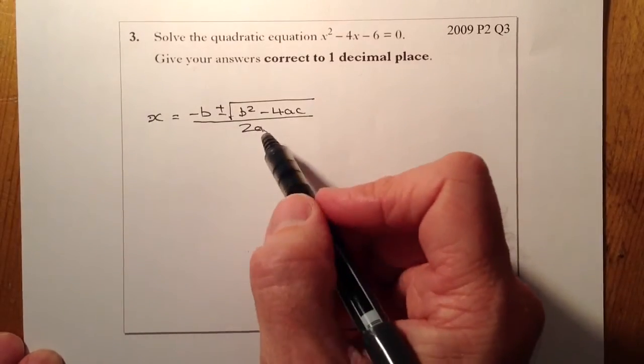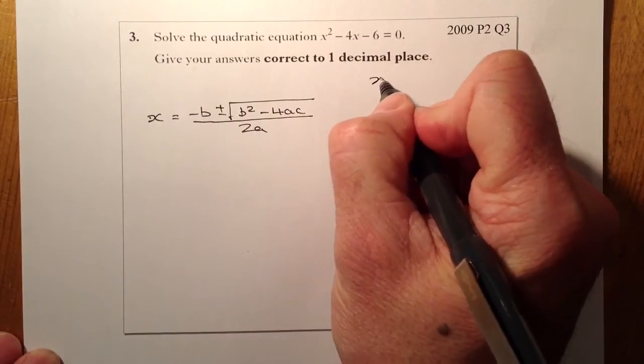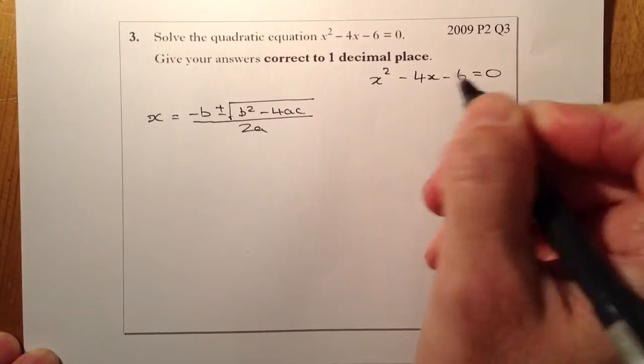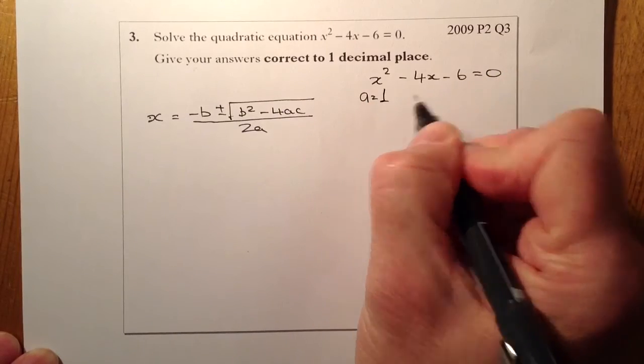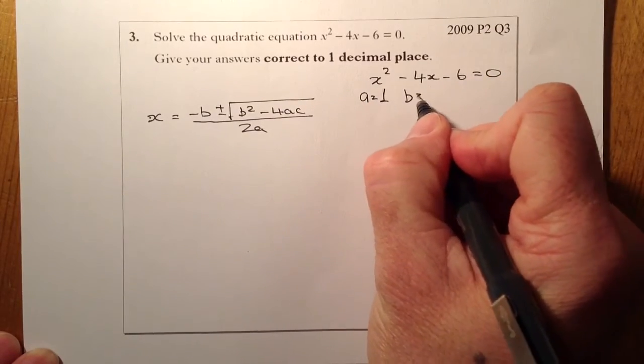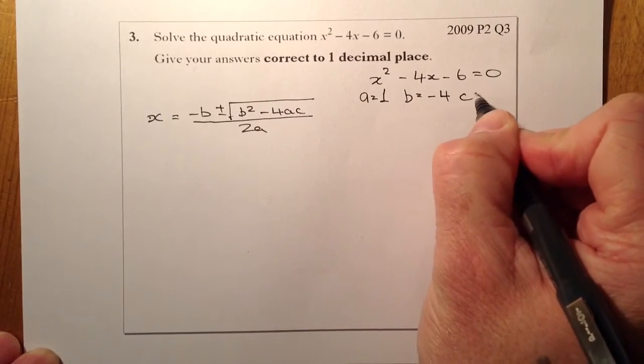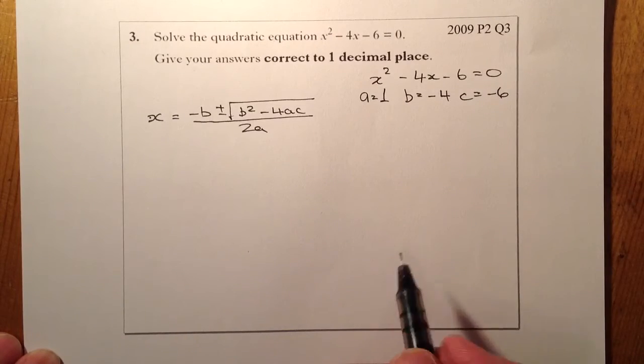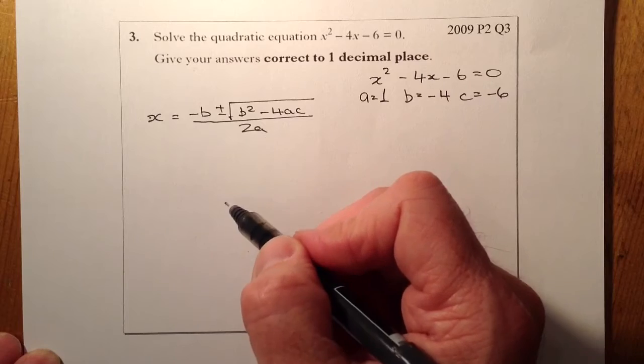What I'm going to do is substitute some values in where the letters are. So a is going to be equal to the coefficient of x squared which is 1, b is equal to the coefficient of x which is minus 4, and c is going to be equal to minus 6. Remember the signs that go along with this as well.